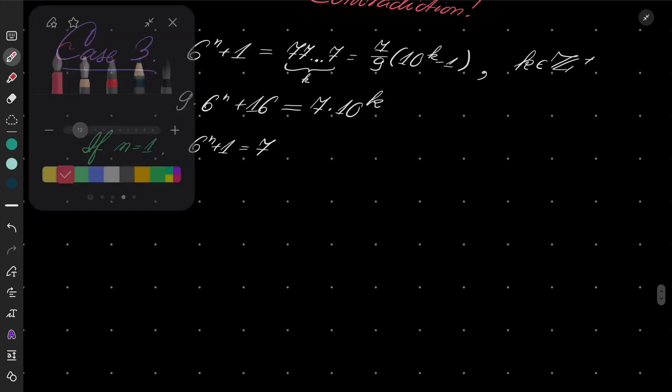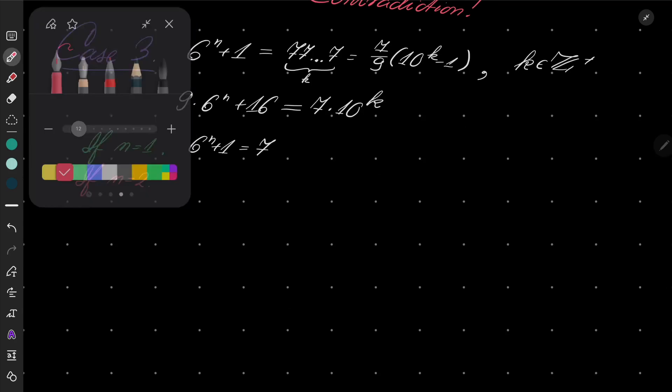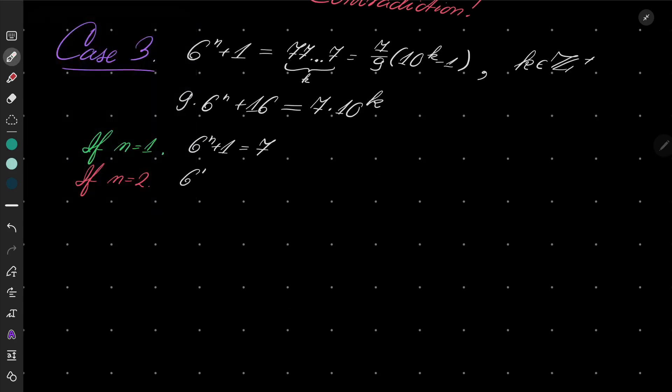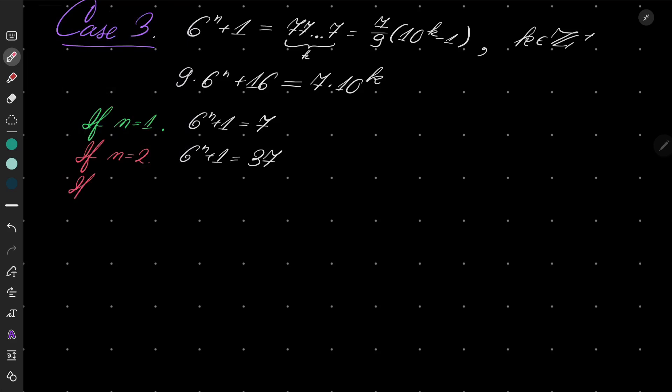If n equals 2, then 6 to the power of n plus 1 is 37, so it does not have all its digits the same. If n equals 3, then 6 to the power of n plus 1 is 6 cubed, which is 216, so it's 217. Let me check it really quick. Yes, it is, so no luck there.